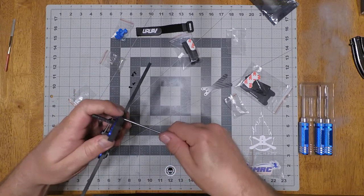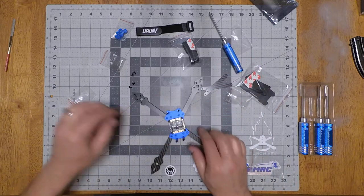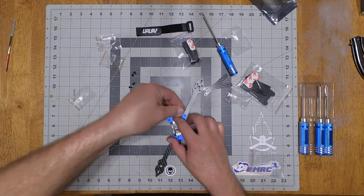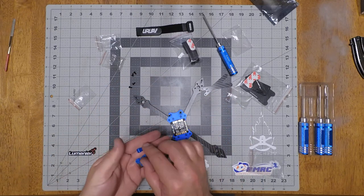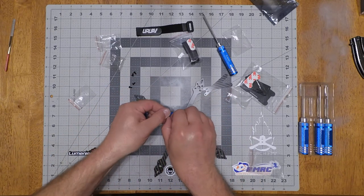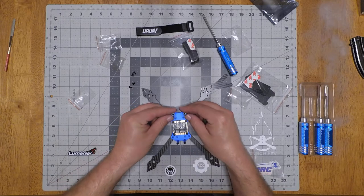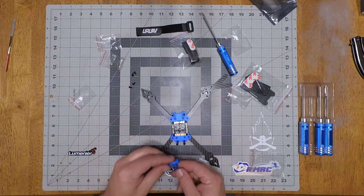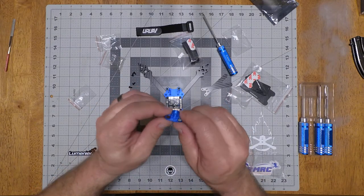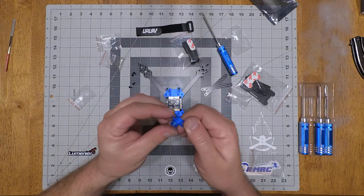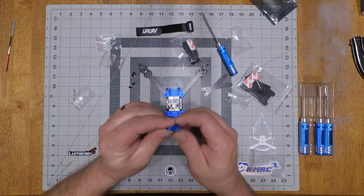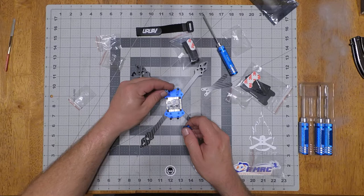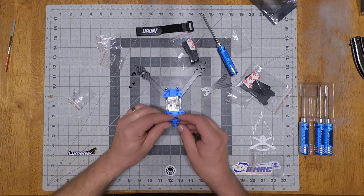And then once that's tight, then you slide your camera mounts on and your antenna mount. There's your camera mounts. These are pretty good TPU prints too. Not bad at all. I would definitely buy them if somebody was selling them.